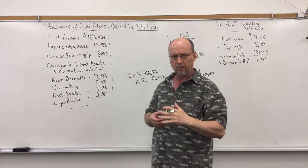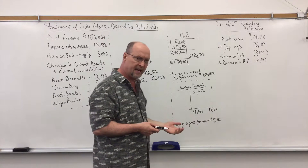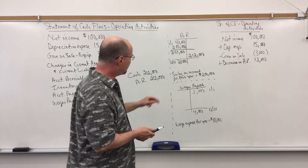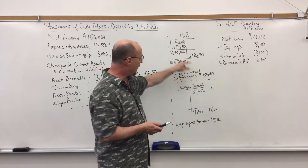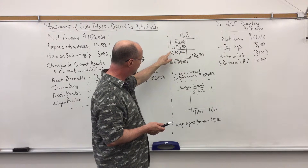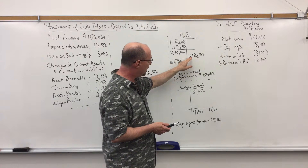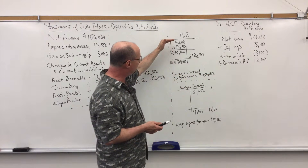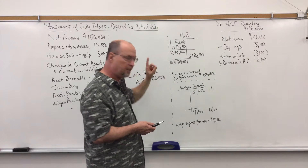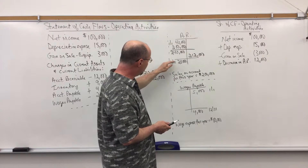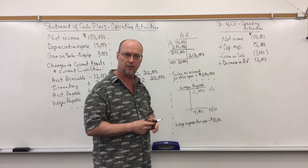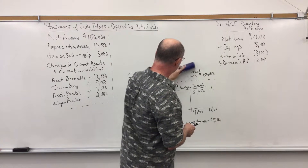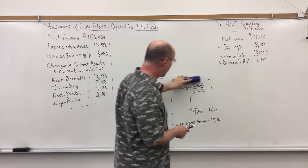It seems counterintuitive, but since we're converting receivables into cash we have more cash than we're reporting in sales. We don't even need the sales figure — we simply look at the beginning and ending balances. All current assets respond the same way: if a current asset decreased, we add back that decrease; if it increased, we subtract the increase.